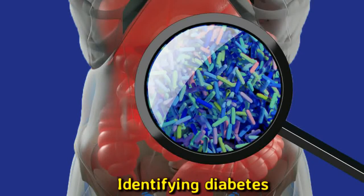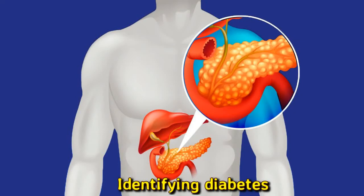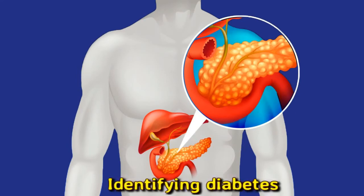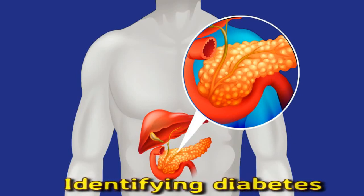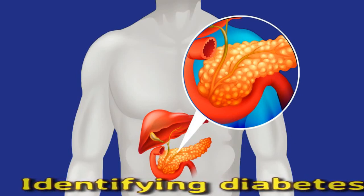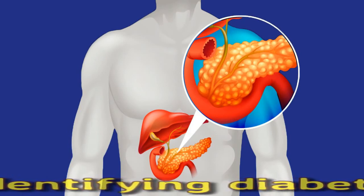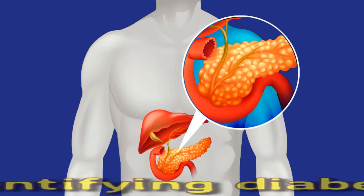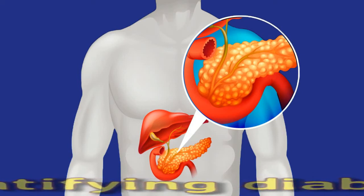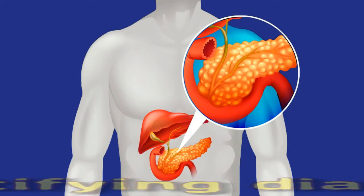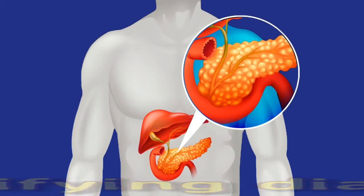People can take a fasting glucose test to help identify diabetes. The American Diabetes Association provides the following parameters for blood glucose levels following a fasting period of at least 8 hours: normal is less than 100 mg per deciliter; pre-diabetes is between 100 to 125 mg per deciliter; diabetes is a reading of 126 mg per deciliter or above. Other tests for diabetes can show blood glucose levels after drinking a sugary drink.